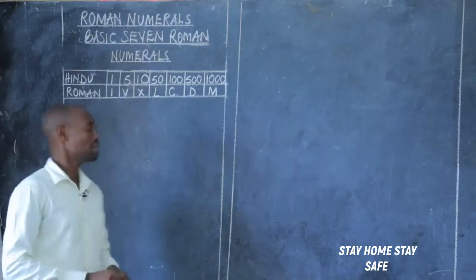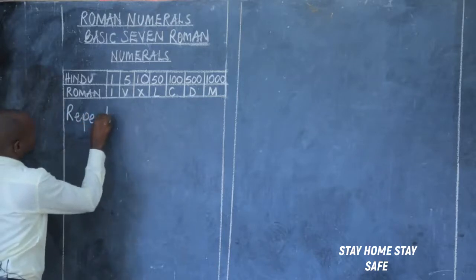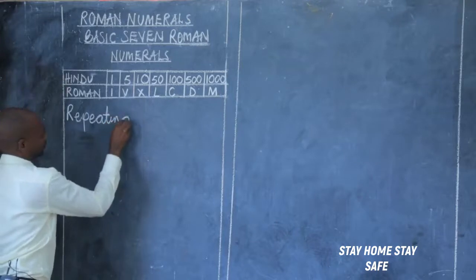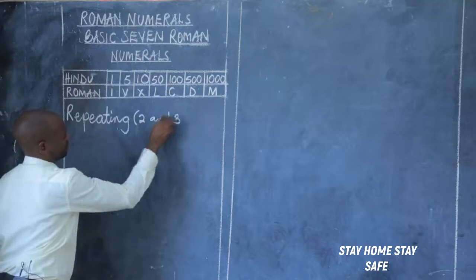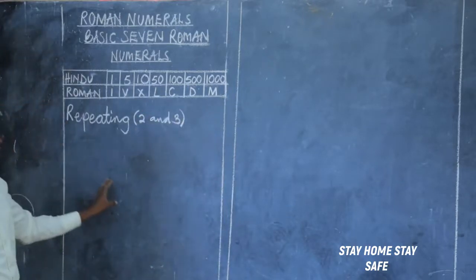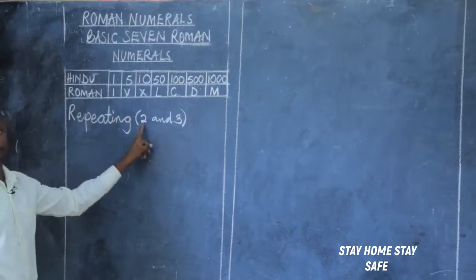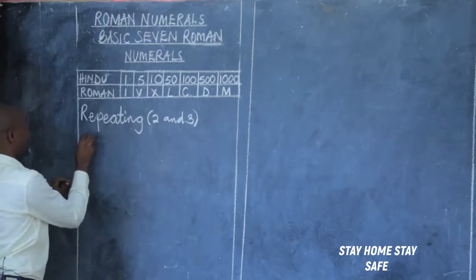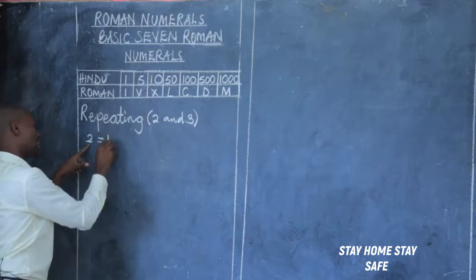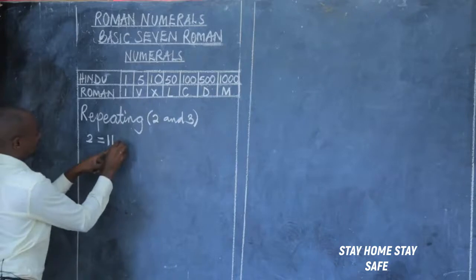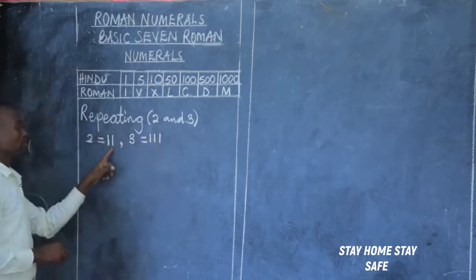Roman numerals are further divided into three categories. We have Roman numerals that are got by repeating. These Roman numerals start with 2 and 3. So any Hindu-Arabic numeral that begins with 2 or 3, you must get it by repeating. For example, 2 — you get it by repeating 1 two times. That is II. Then we have 3, which is written as III. You repeat 1 three times.